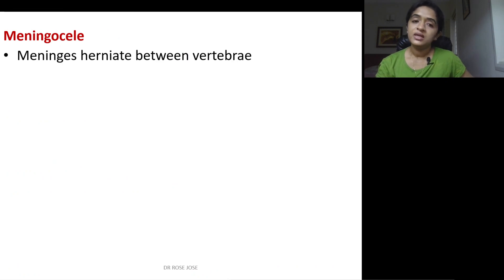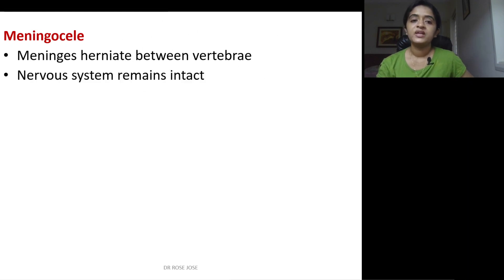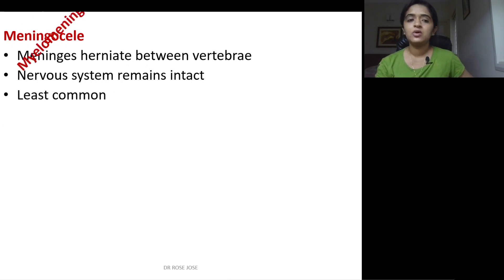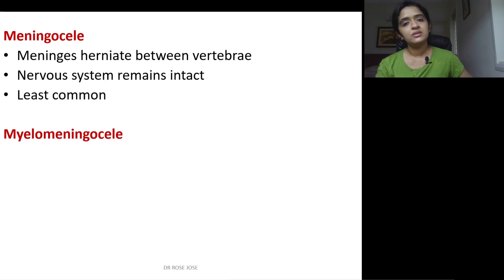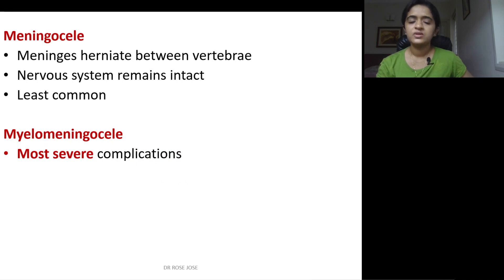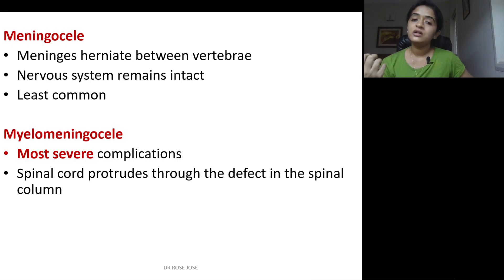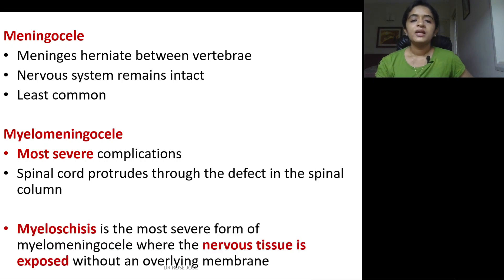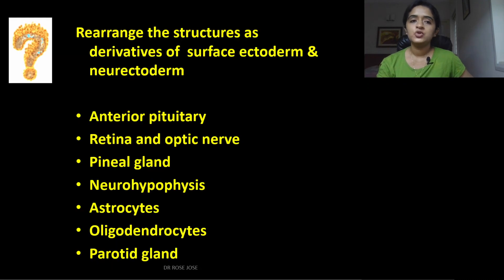Meningocele is the next type, where only the meninges herniate through the vertebral defect while the nervous system remains intact; it is the least common variety. Myelomeningocele involves herniation of both the spinal cord and meninges through the defect, causing the most severe complications. The most severe form is myeloschisis, where nervous tissue is directly exposed externally without any overlying membrane.